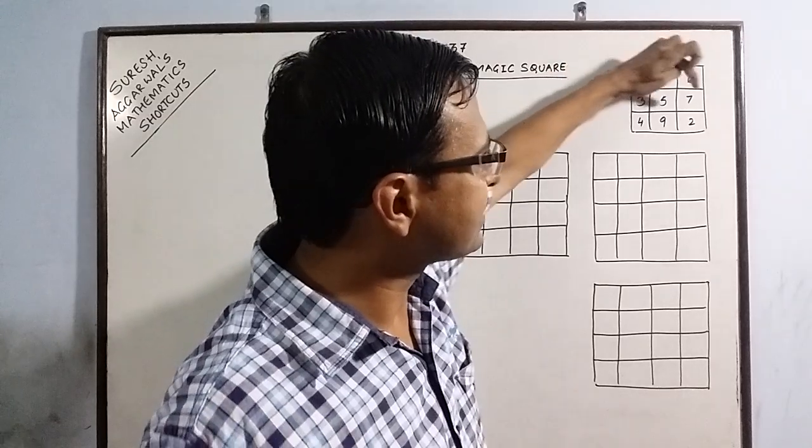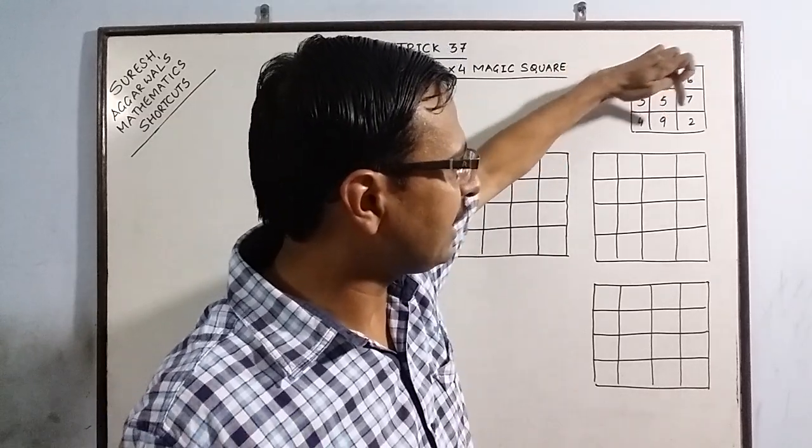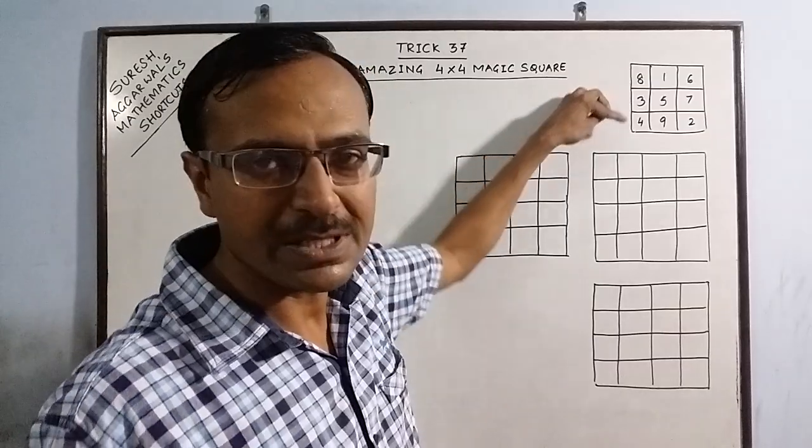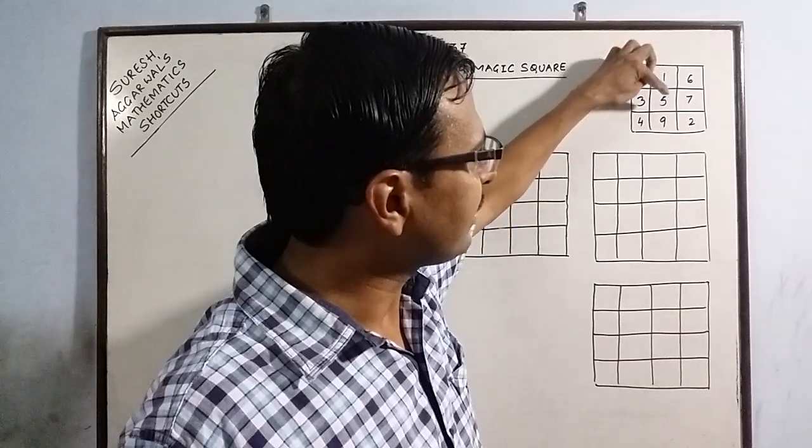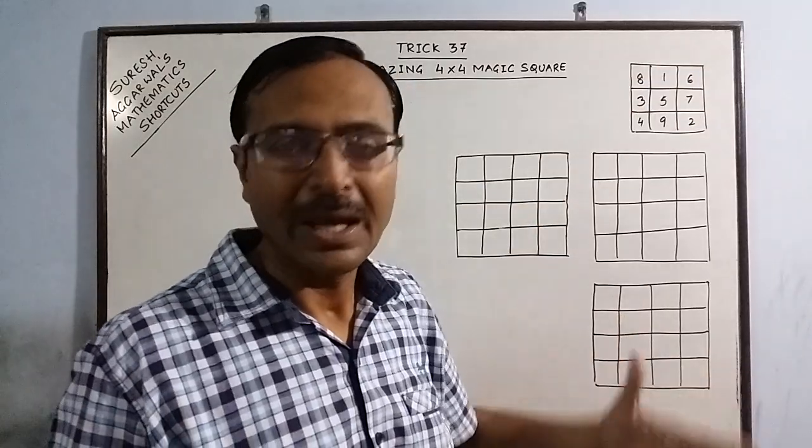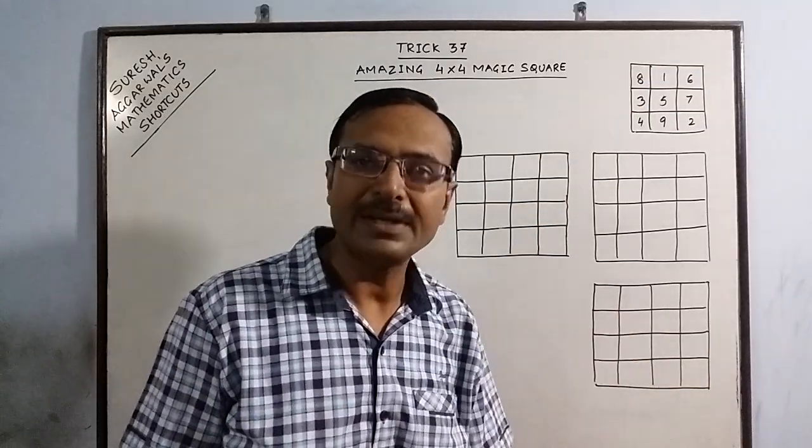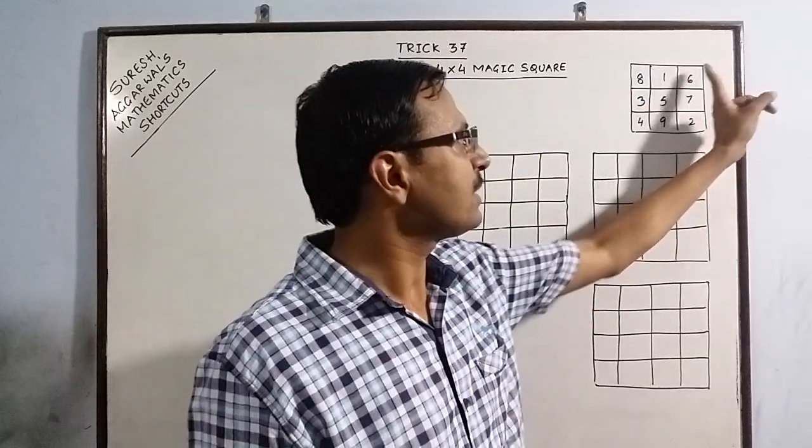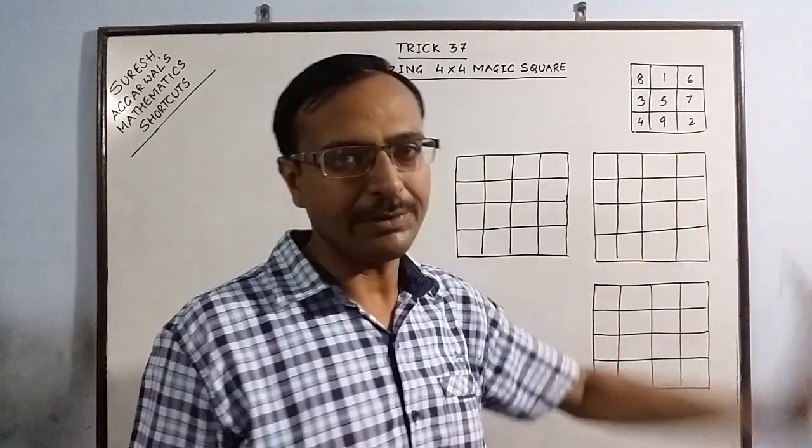3 plus 5, 8 plus 7, 15. 4 plus 9, 13 plus 2, 15. Similarly, in columns, 8 plus 3, 11 plus 4, 15. 1 plus 5, 6 plus 9, 15. 6 plus 7, 13 plus 2, 15. And even if you see the diagonal elements, they will also add up to 15. Like 8 plus 5, 13 and 2, 15. 6 plus 5, 11 plus 4, 15.